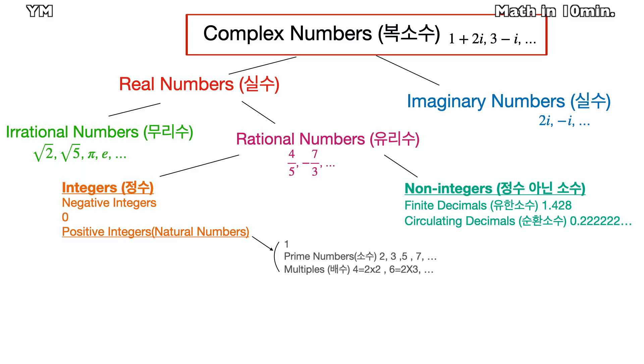And lastly, complex numbers consist of the real numbers and the imaginary numbers.